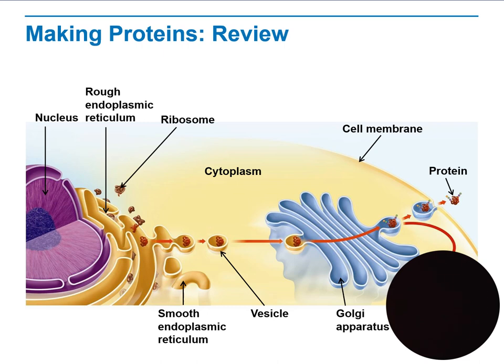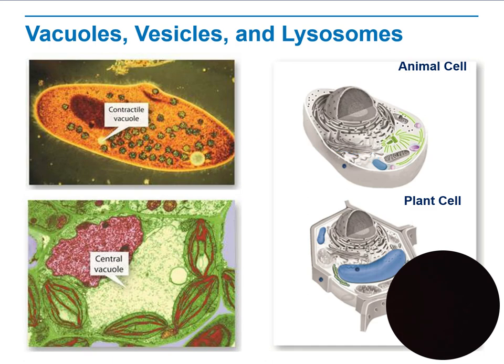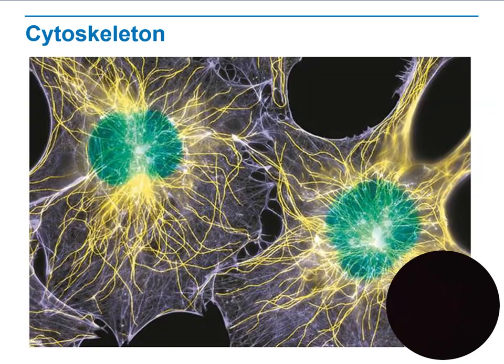We will talk about the production of proteins inside the cell, and then we will talk about the different types of vacuoles that exist between plant cells and animal cells — how they are large, referred to as huge vacuoles in plant cells compared to animal cells, because of their function inside the plant cell.